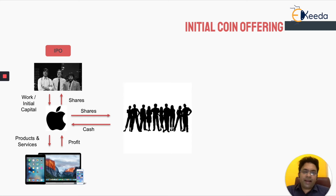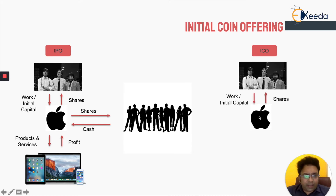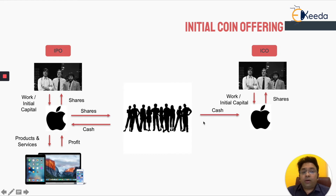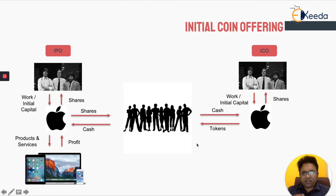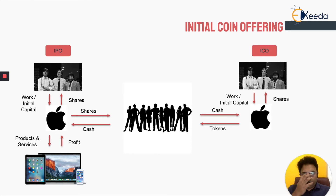Now we are going to compare this against the concept of ICOs, where the initial step is the same — the same people invest their initial capital and some work in creating the company and they get the shares of the company. Now they want money for expansion, so they go to the general public and get cash. But instead of giving shares of the company — shares contain a lot of things: voting, ownership and a lot of stuff — giving a share to a person who is outside the US is kind of difficult. They need to file a lot of returns and there are a lot of compliance issues, especially when you have to go global and issue shares to a global citizen.